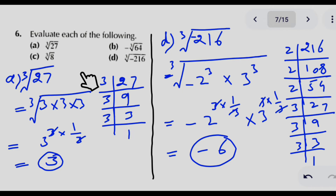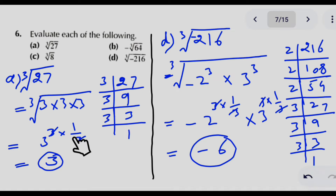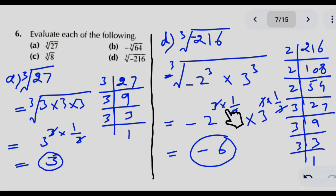In question number 6, we find the cube root of various numbers. In part A, the cube root of 27 — the factors of 27 are 3 × 3 × 3, written as 3 to the power 3 in index notation. Multiplying by the cube root power of 1/3, the 3s cancel and the answer is 3. For the cube root of 216, similarly finding factors and writing in index notation, the powers simplify to give the answer minus 6.